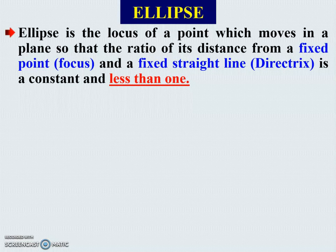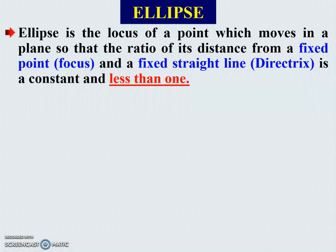The conical curves are not only one — conical curves are ellipse, parabola, and hyperbola. For each different curve the ratio is fixed but different. Ellipse is the locus of a point which moves in a plane so that the ratio of its distance from a fixed point and a fixed straight line is always constant and is less than 1. So if that ratio is less than 1, we get the curve called an ellipse.